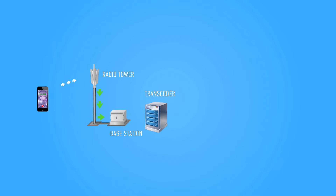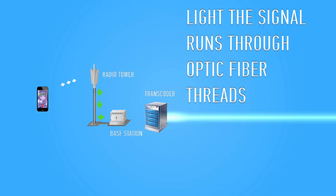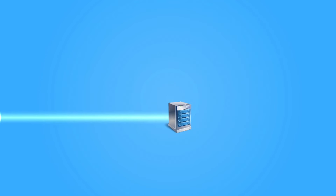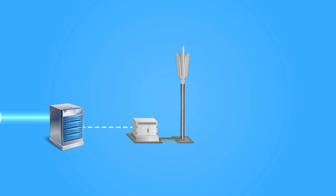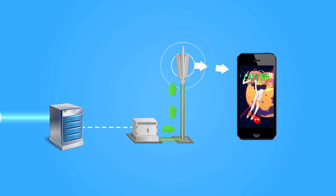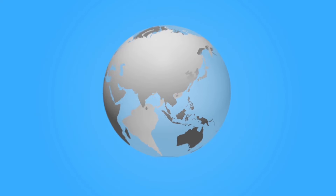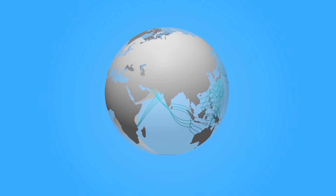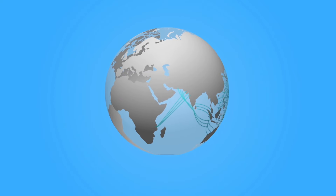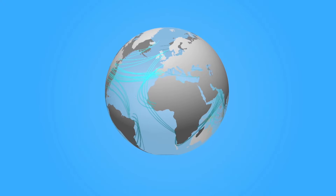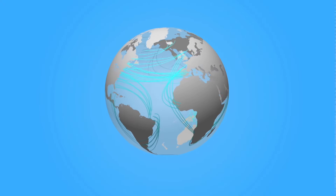In the form of light, the signal rushes to the next station, where it turns to a radio signal once again and is transmitted to a subscriber. Cities, countries, and entire continents are linked with optic fiber threads. Dozens of thousands of kilometers — all internet traffic is transmitted by these very threads.